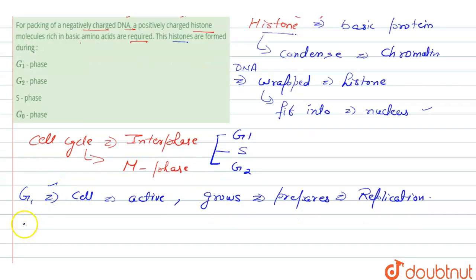In the next phase, which is the S phase, this is responsible for the synthesis of DNA, or we can say replication of DNA. Here replication takes place, and if DNA is formed, that means histone protein is also formed here for the wrapping of the DNA. So histone is formed in the S phase.